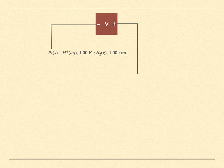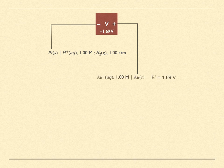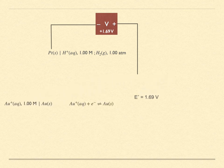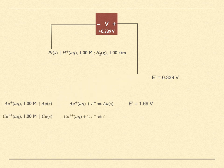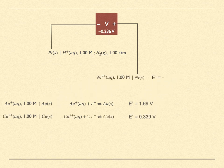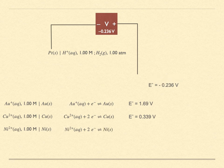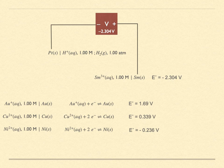Here's our testing setup. The reference SHE electrode is connected to the negative input of the voltmeter. First, we test the Au⁺ cell and measure plus 1.69 volts — we assign that to the standard reduction potential of the Au⁺/Au redox couple. Then we connect the Cu²⁺ cell and measure plus 0.339 volts, assigning that as its SRP. Then we connect the Ni²⁺ cell and measure minus 0.236 volts — this is now its SRP value. Finally, we connect the Sm³⁺ cell, measure minus 2.304 volts, and assign its SRP value.